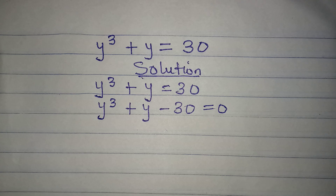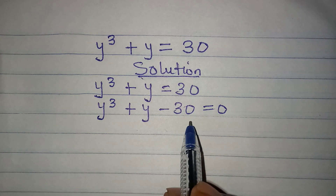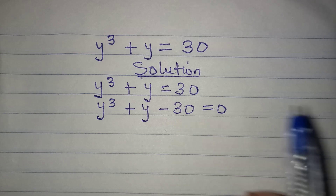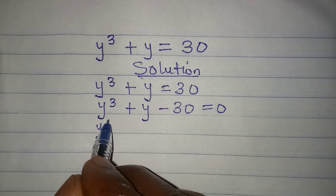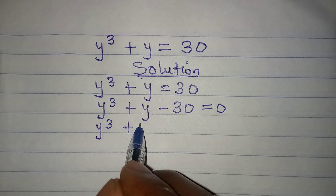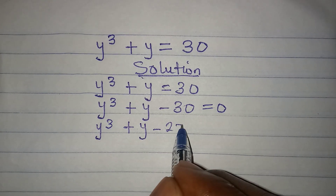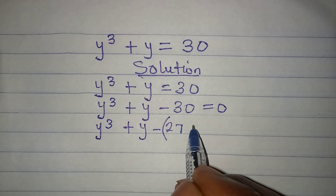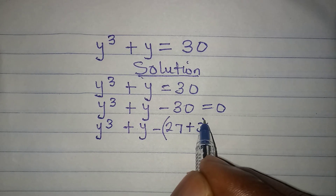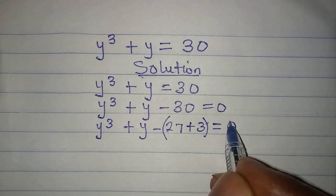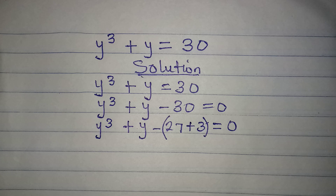Now, how do we factorize this? I have to break 30 into two parts, so I have y to the power of 3 plus y minus 27 plus 3, which equals zero, because 27 plus 3 gives 30.